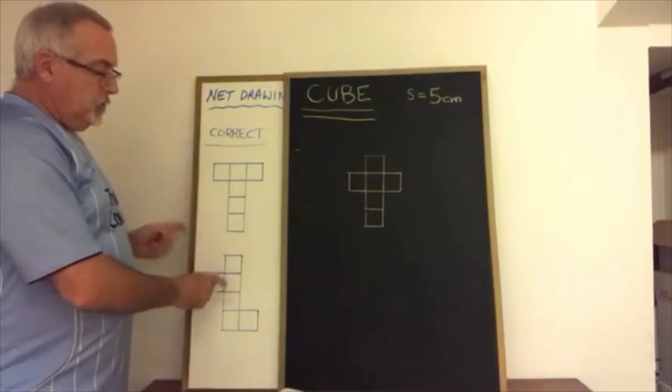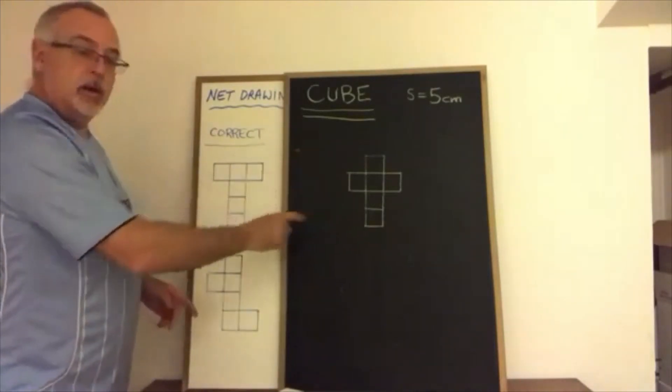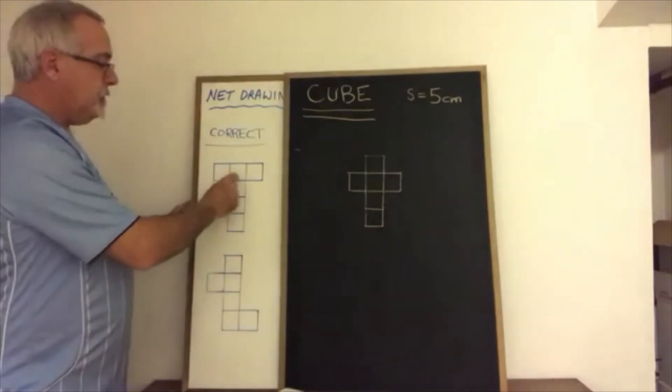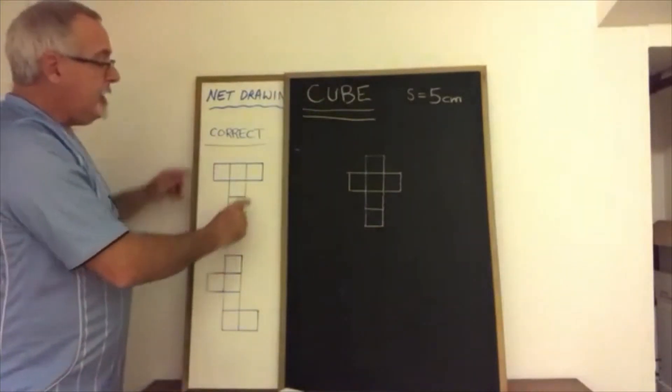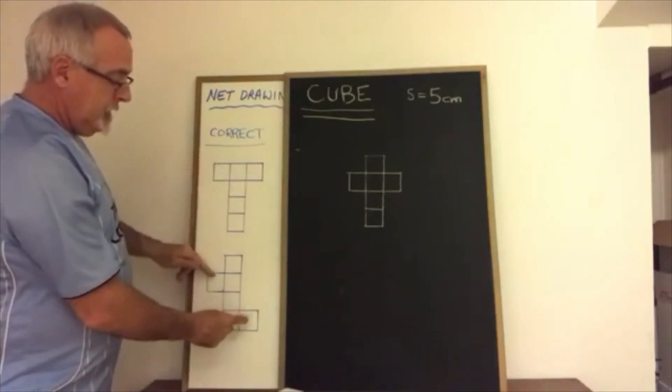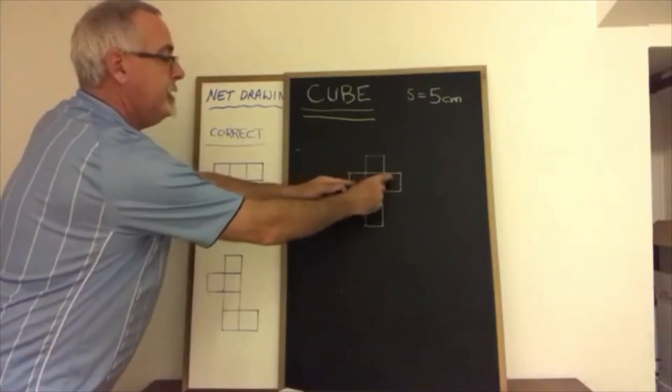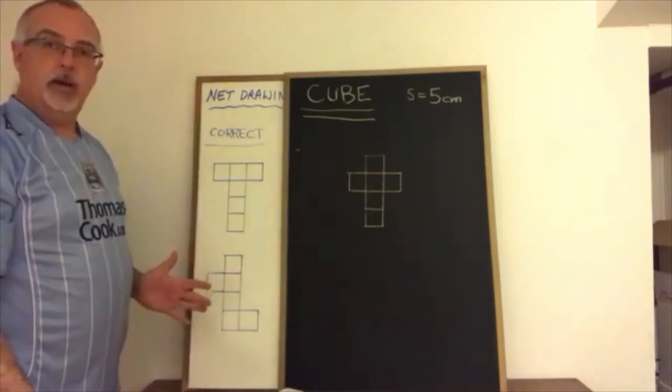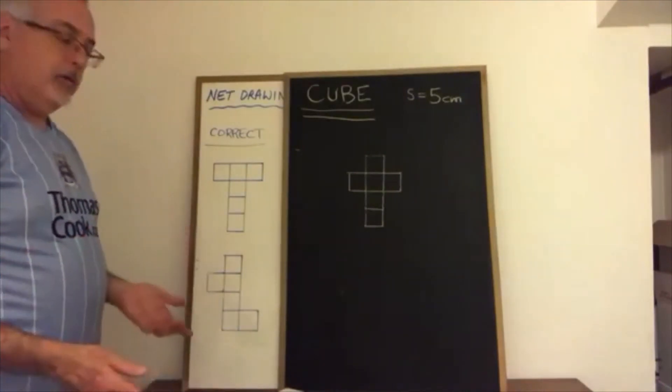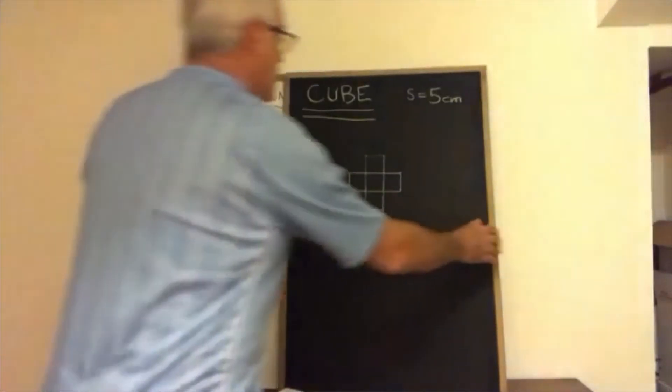Another is to notice a rule that all three of these are following including the one that's not a letter t which is that all of them have four squares in a row and then two others on the side but the two others are on opposite sides. Okay so left and right side, left and right side, left and right side, they always work when you do it that way. So that's a good rule to memorize. How about incorrect ways of drawing a net of a cube?